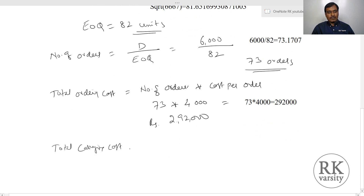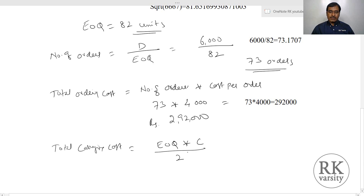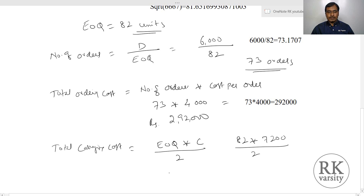Now your total carrying cost equals to economic order quantity times your carrying cost upon 2. We take the average of the carrying cost because inventory is not held constantly at all times. If you place an order for 82 units, those 82 units gradually reduce until the next order arrives. So your total carrying cost is 82 times Rs. 7,200 upon 2, which equals to Rs. 2,95,200.